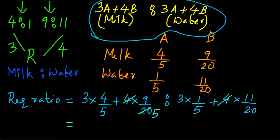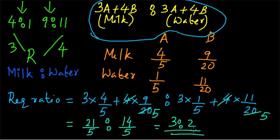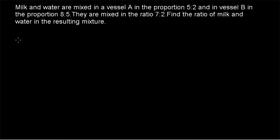We can cancel 4 and 20 in both terms, giving us 12/5 + 9/5, which equals 21/5, is to 3/5 + 11/5, which equals 14/5. This gives us 21 is to 14, which simplifies to 3 is to 2. That is our final answer for the first example.